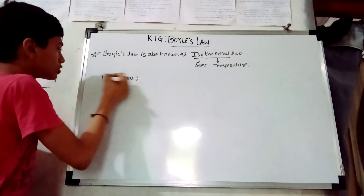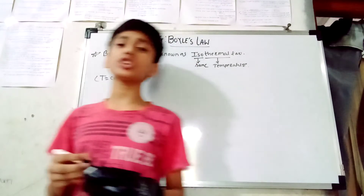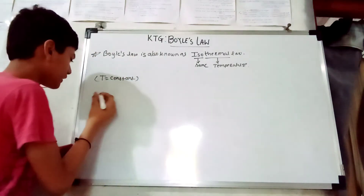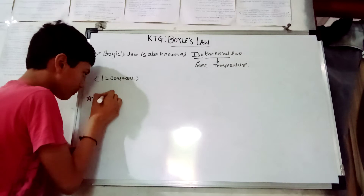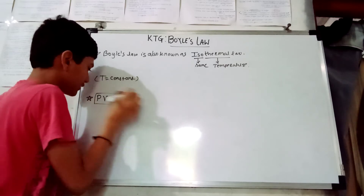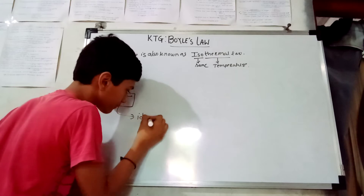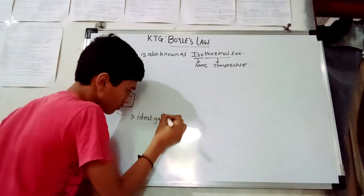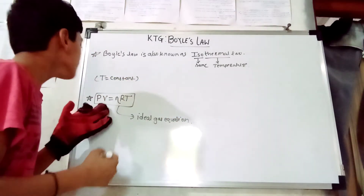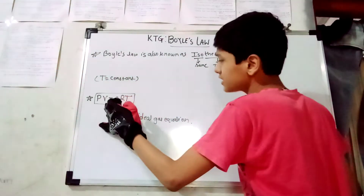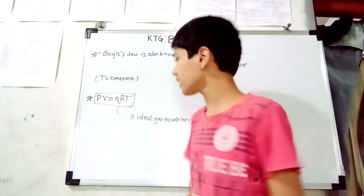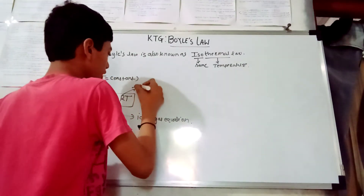In classical chemistry, we studied the chapter 'States of Matter,' in which you have studied the ideal gas equation. That equation is PV = nRT — this is the famous equation. Here, P is the pressure, V is the volume, N is the number of moles, R is the universal gas constant (which is a constant), and T is the temperature.